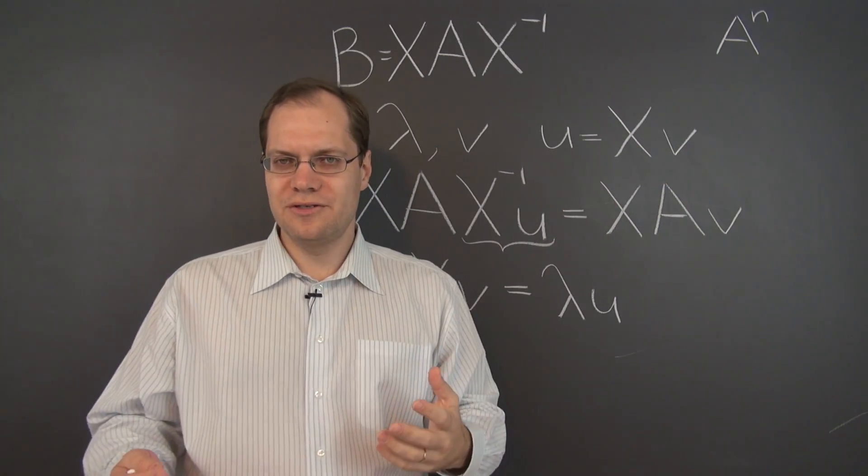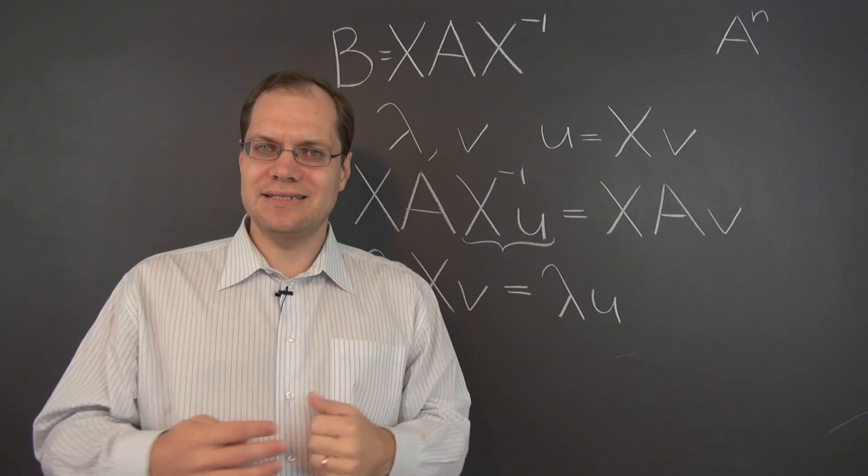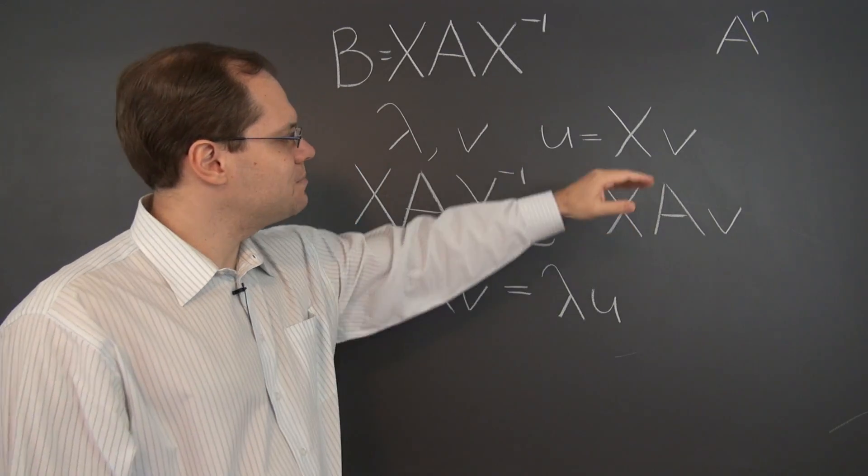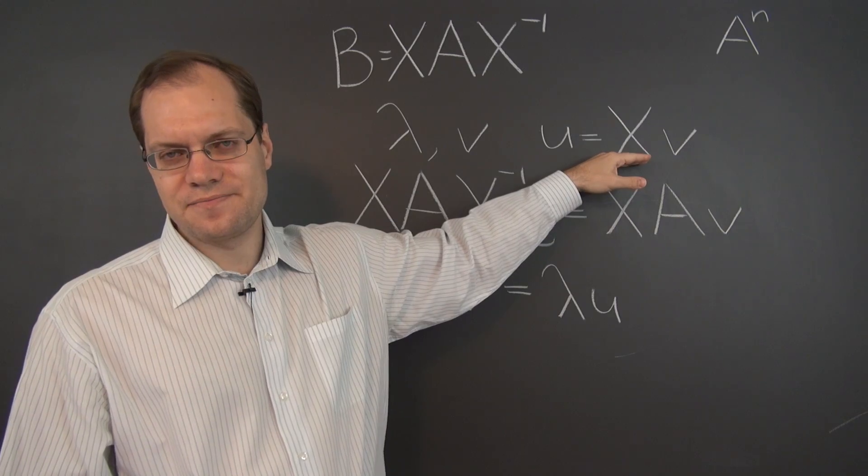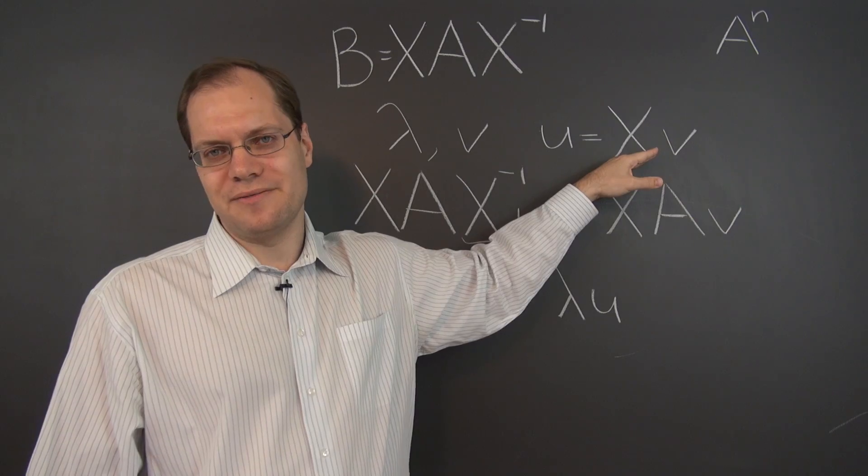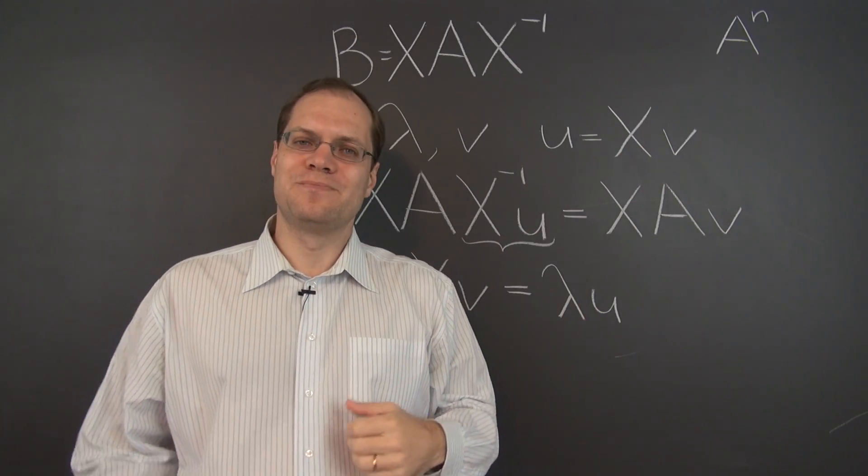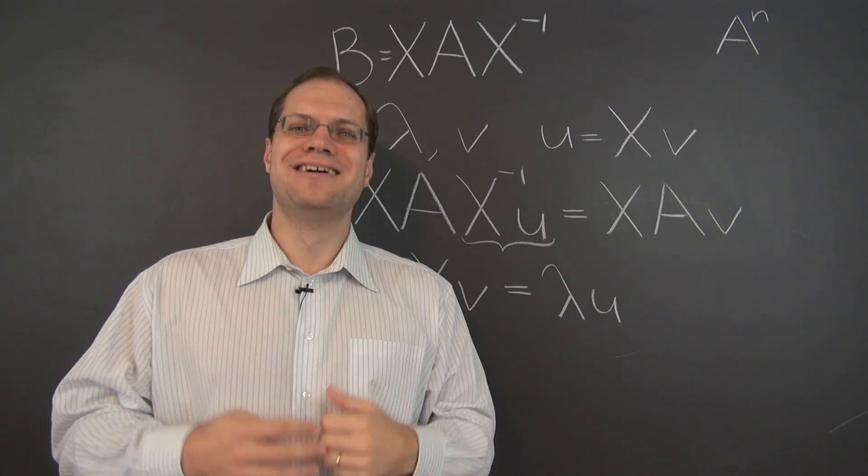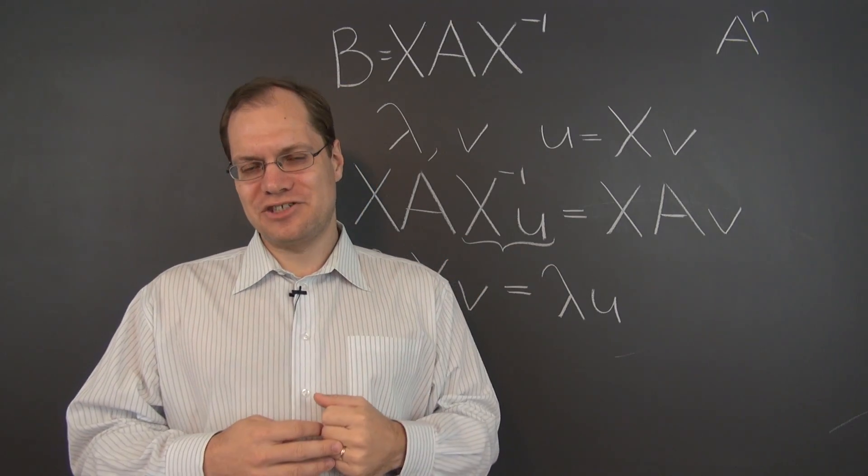So we conclude that A and B have identical eigenvalues, and their eigenvectors are related by the transformation X. And do you see how I use the terms matrix and transformation interchangeably? That's just how it is. So let me repeat our conclusion regarding the similarity transformation.